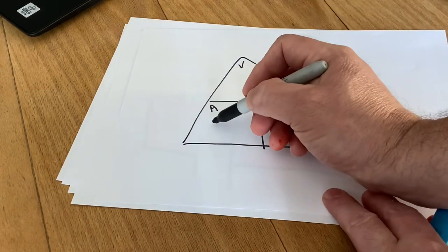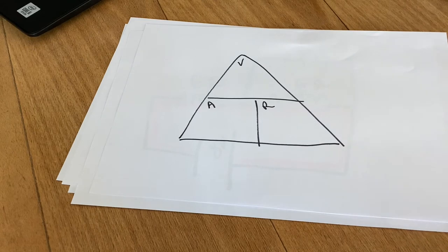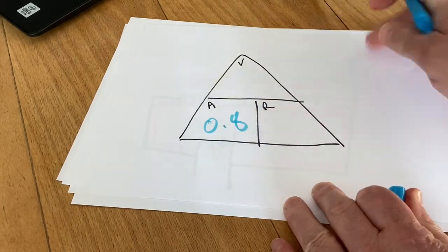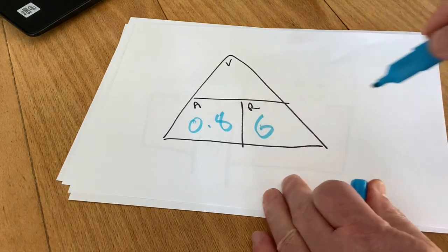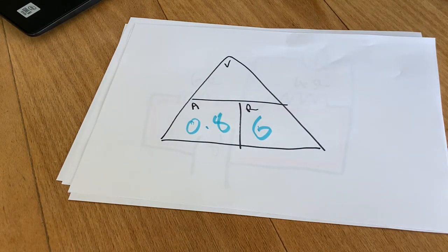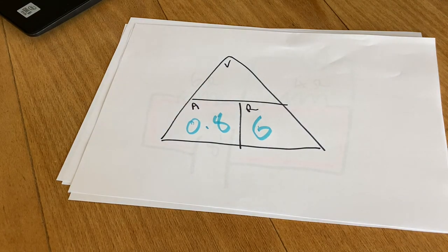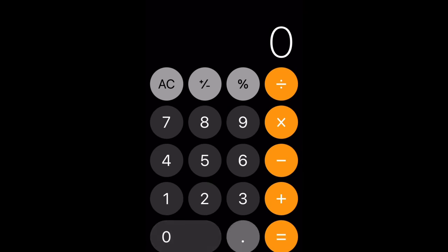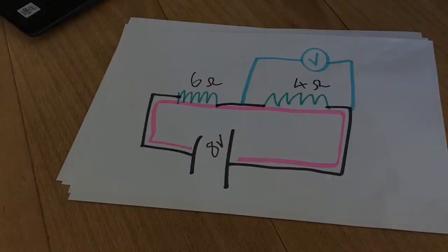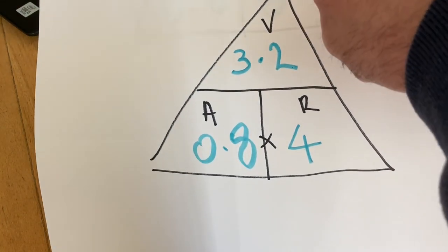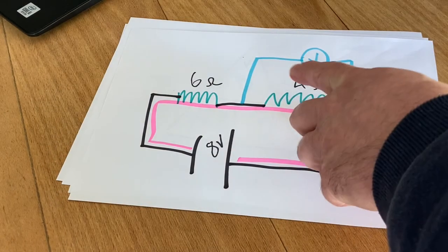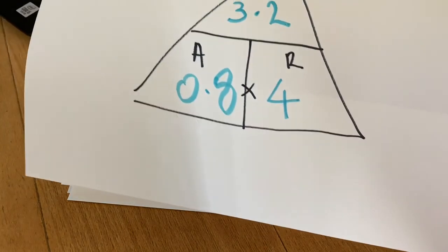So the volt drop across this one will be... We know our amperage is 0.8 and the resistance on that one is 6 ohms. So I'll write 6 in there. 0.8 times 6. We'll do that on the calculator. So I'll punch in 0.8 multiplied by 6 equals 4.8.